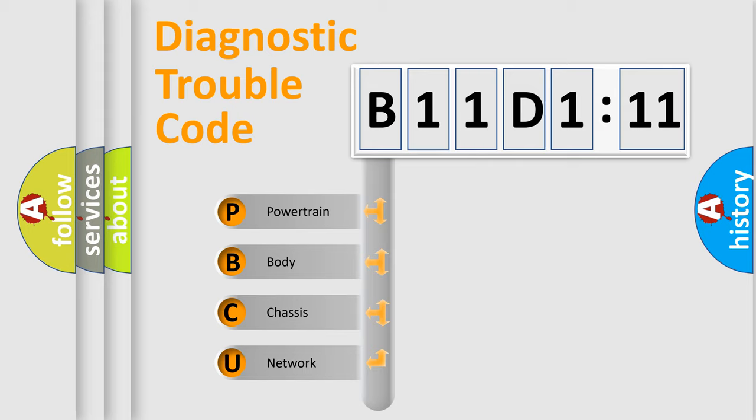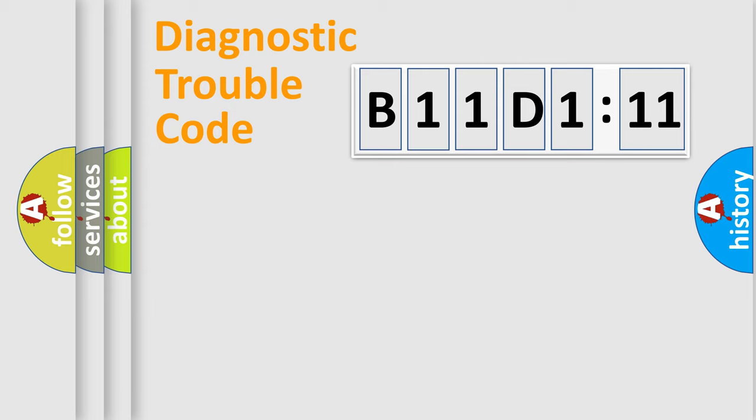We divide the electric system of automobile into four basic units: Powertrain, Body, Chassis, and Network.